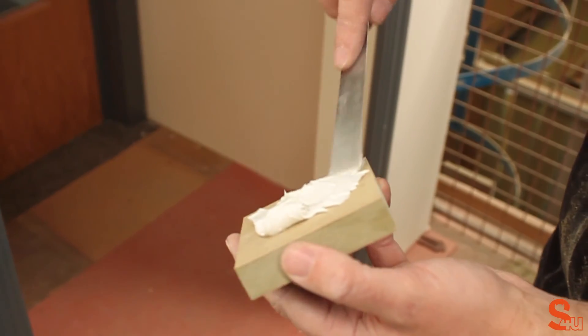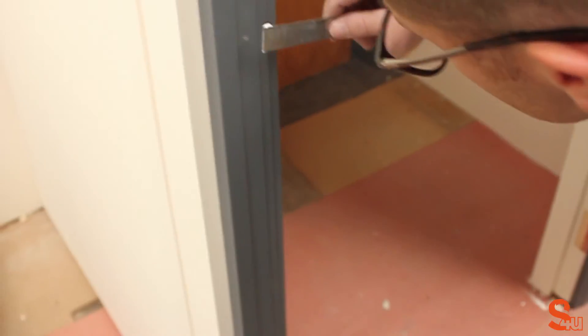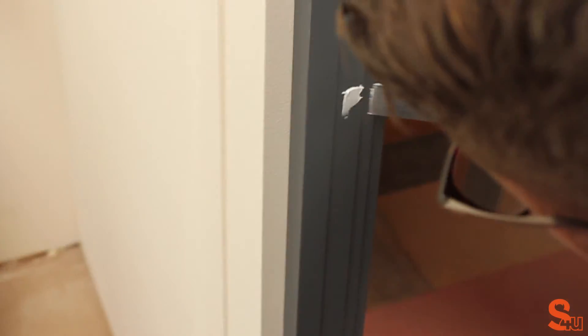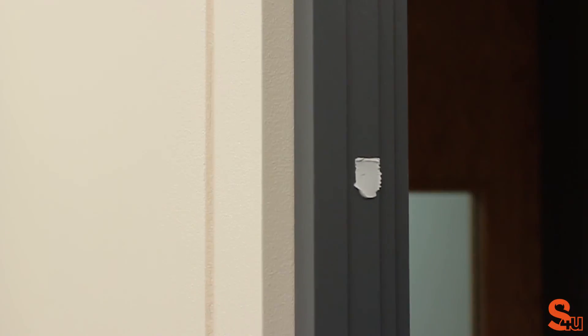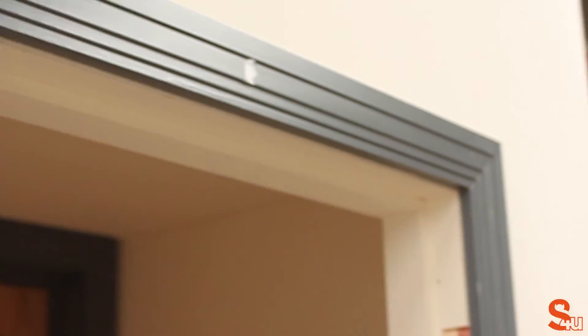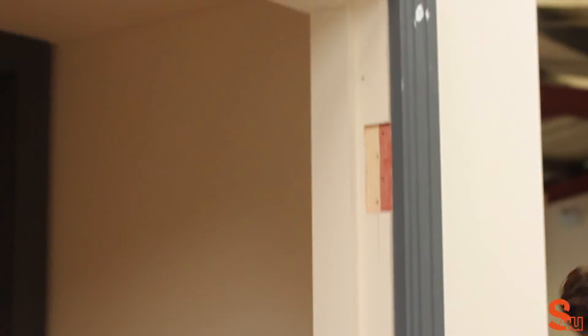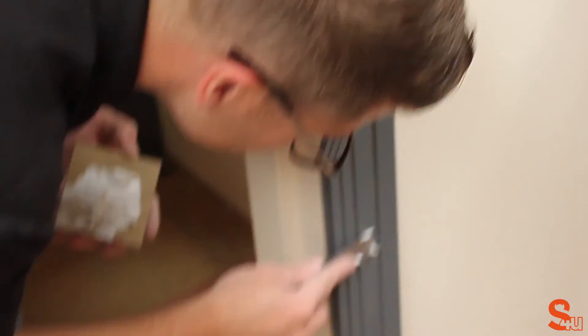Finally, to cover up the holes ready for painting, then you use wood filler and a palette knife and just go over those holes. Let that dry and then you can sand it off, make it smooth, and then paint over it with any touch-up paint.